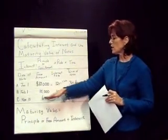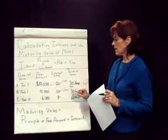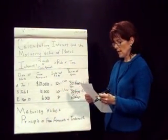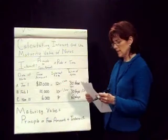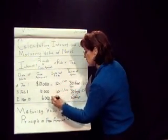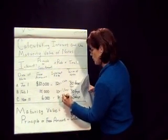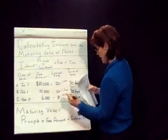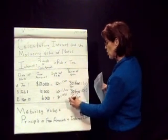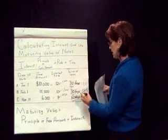Going down to the last note, it's dated November the 15th. The face amount is $6,000 and the interest rate is 8%. So we take $6,000 times 8%, which gives us $480, and then multiply that by 60 days over 360, which gives us $80.